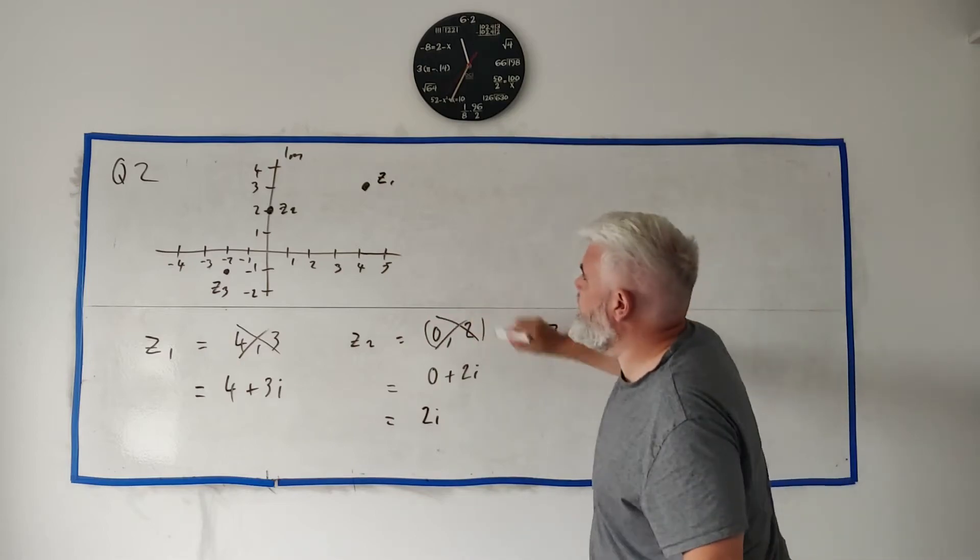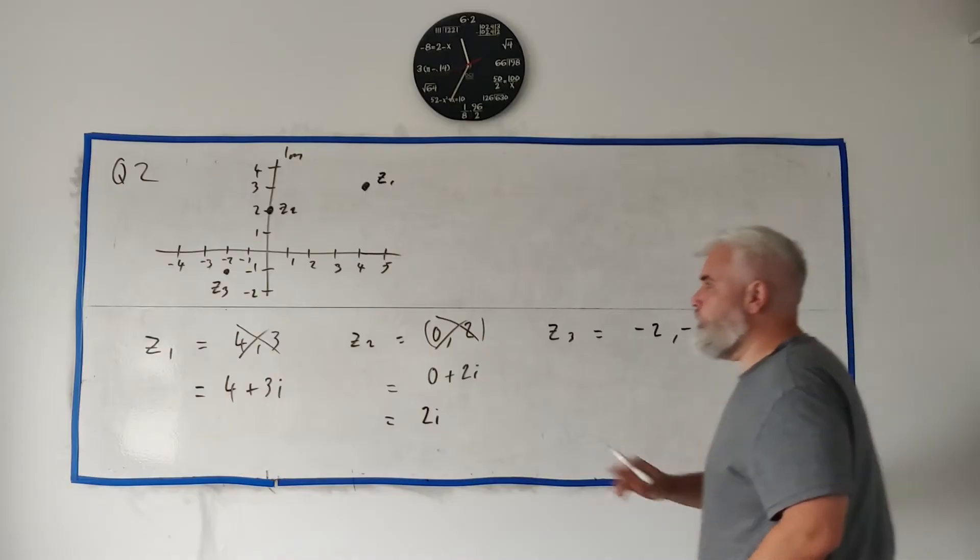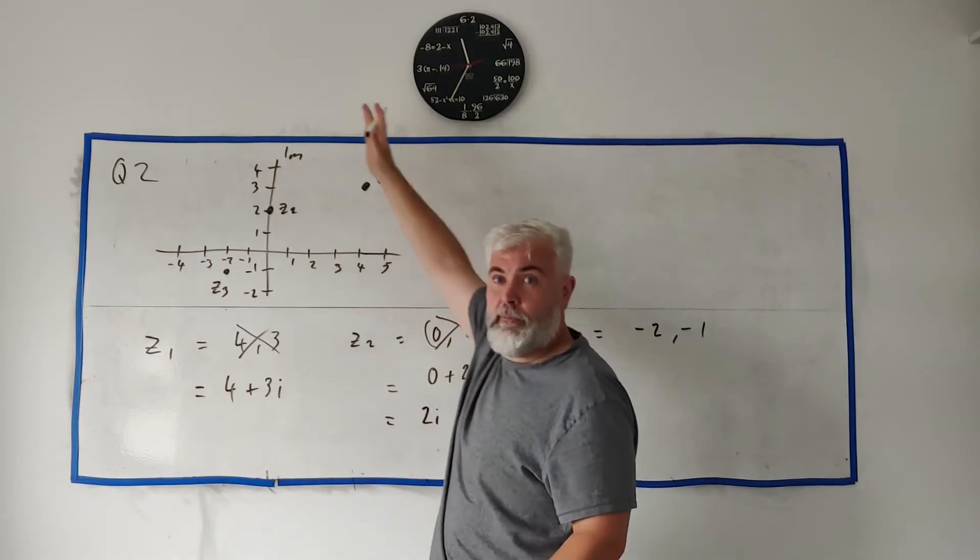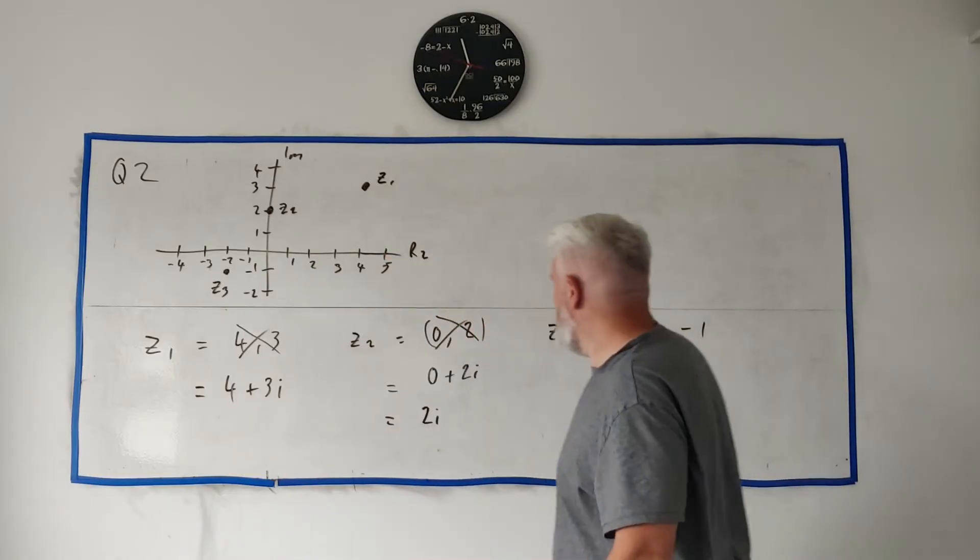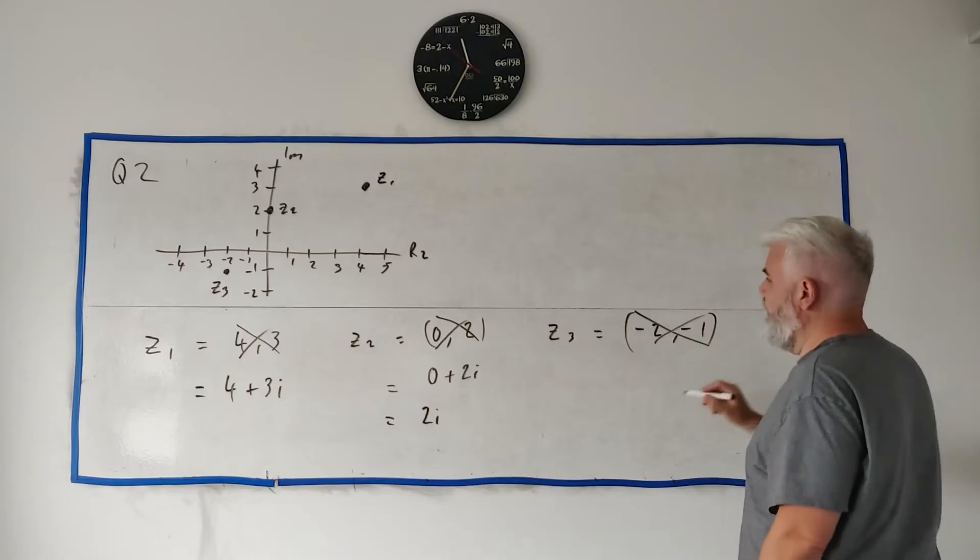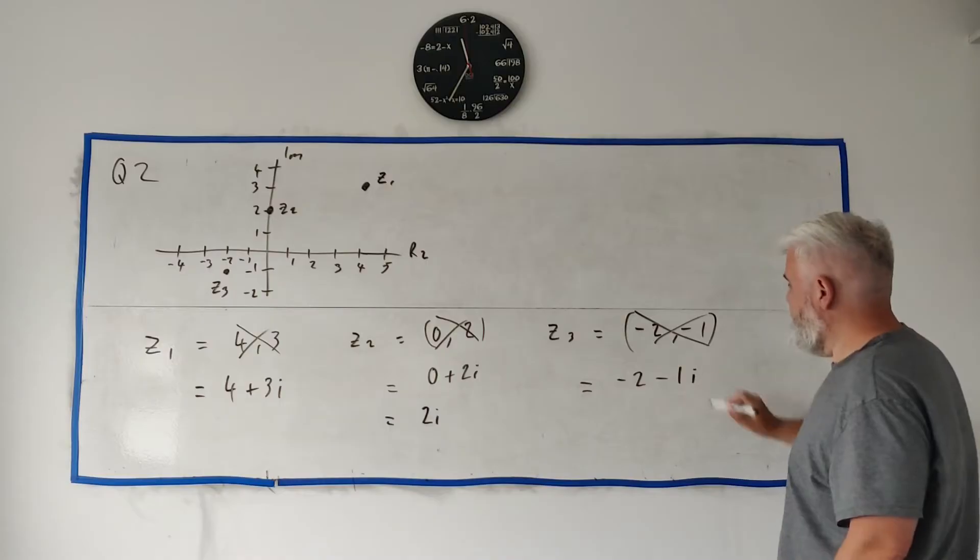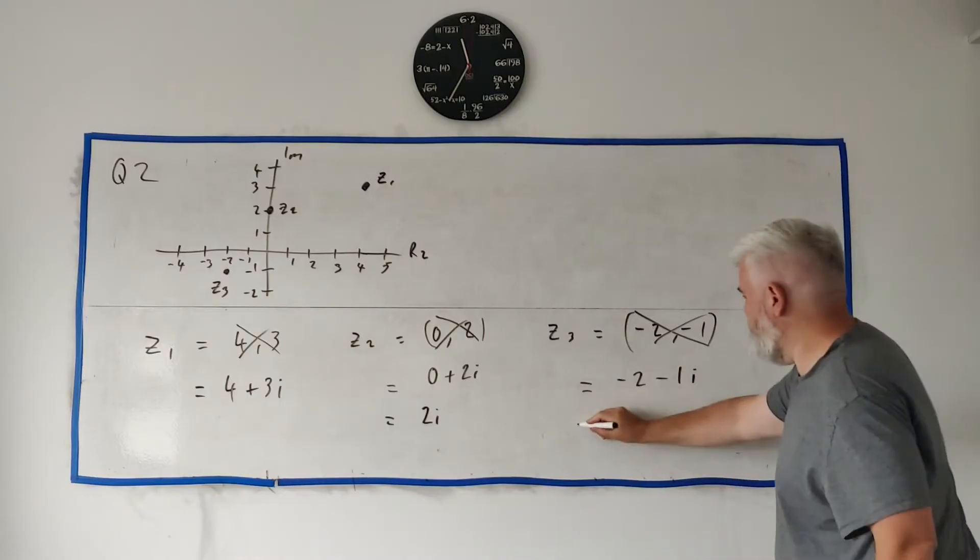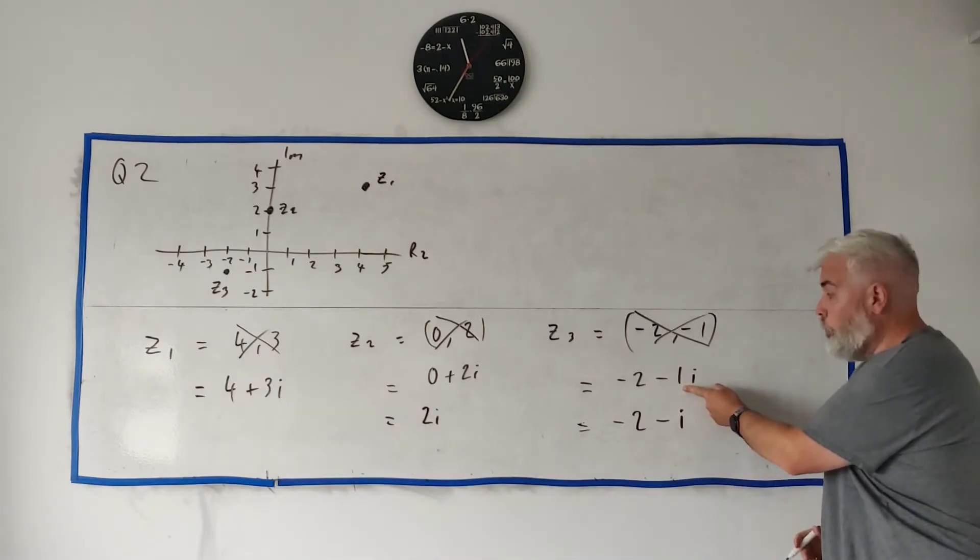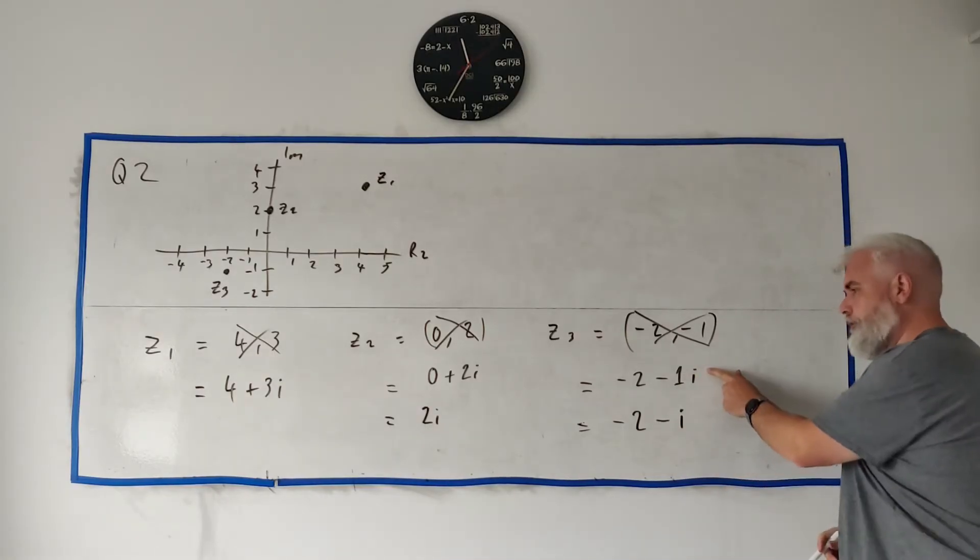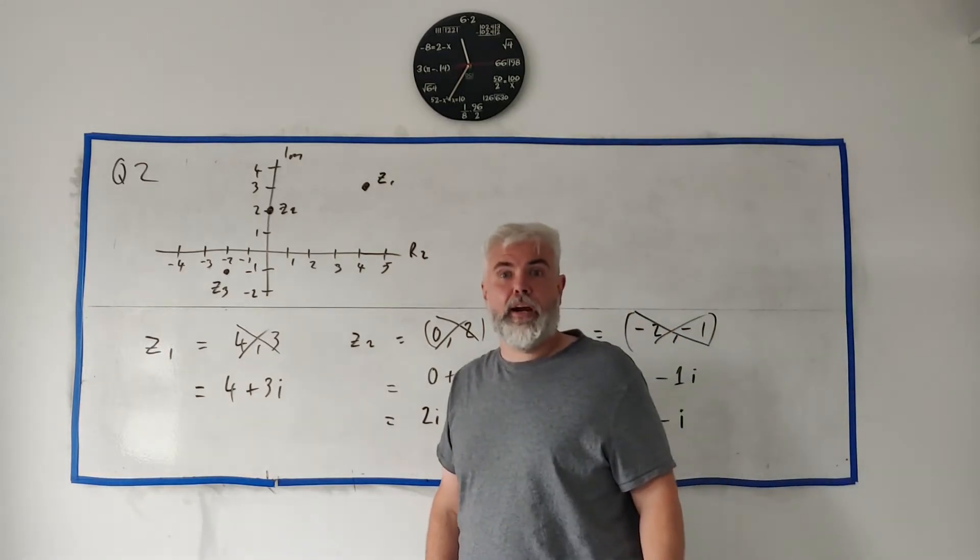And then Z3. Again, it's not minus 2 minus 1. Remember, always take the x before the y. Same in this case. It's the real before the imaginary. But it's not this one. It's not minus 2 minus 1. It's minus 2 minus 1i. Again, I don't write it like that though. I actually write minus 2 minus i. Don't bother put the 1 in. Although again, you'll get full marks for both of these.